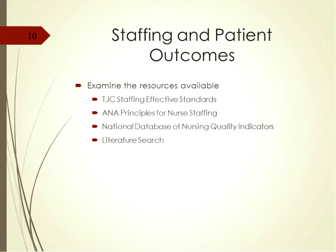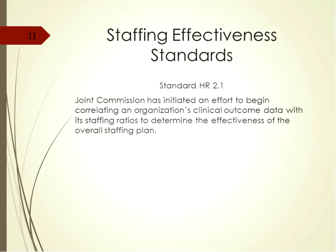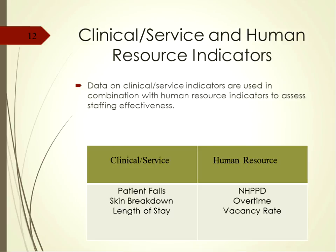Staffing and patient outcomes has been identified through various resources. There is definitely a relationship between staffing, level of staff, and patient outcomes. Resources include the Joint Commission Staffing Effectiveness Standards, the American Nurses Association Principles for Nurse Staffing, and the National Database for Nursing Quality Indicators. The Joint Commission has initiated an effort to correlate organizational clinical outcome data with staffing ratios to determine the effectiveness of the overall staffing plan.